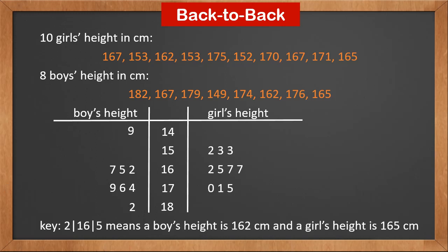One last important thing is to write the key. Remember to provide information for both sets: '2 | 16 | 5' means a boy's height is 162 centimeters and a girl's height is 165 centimeters.